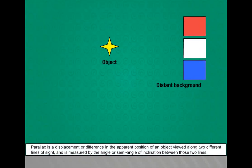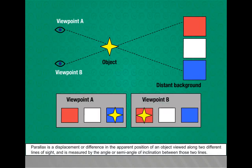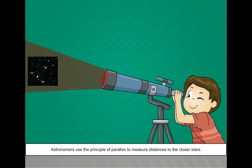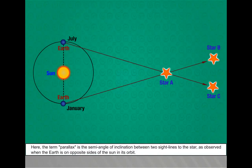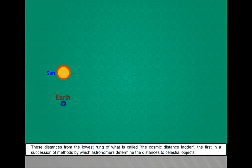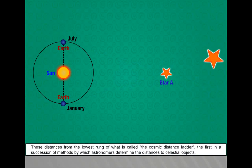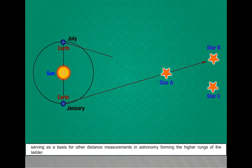Parallax is a displacement or difference in the apparent position of an object viewed along two different lines of sight and is measured by the angle or semi-angle of inclination between these two lines. Astronomers use the principle of parallax to measure distances to the closest stars. Here, the term parallax is the semi-angle of inclination between two sight lines to the star, as observed when the Earth is on opposite sides of the Sun in its orbit. These distances form the lowest rung of what is called the cosmic distance ladder - the first in a succession of methods by which astronomers determine the distances to celestial objects, serving as a basis for other distance measurements in astronomy, forming the higher rungs of the ladder.